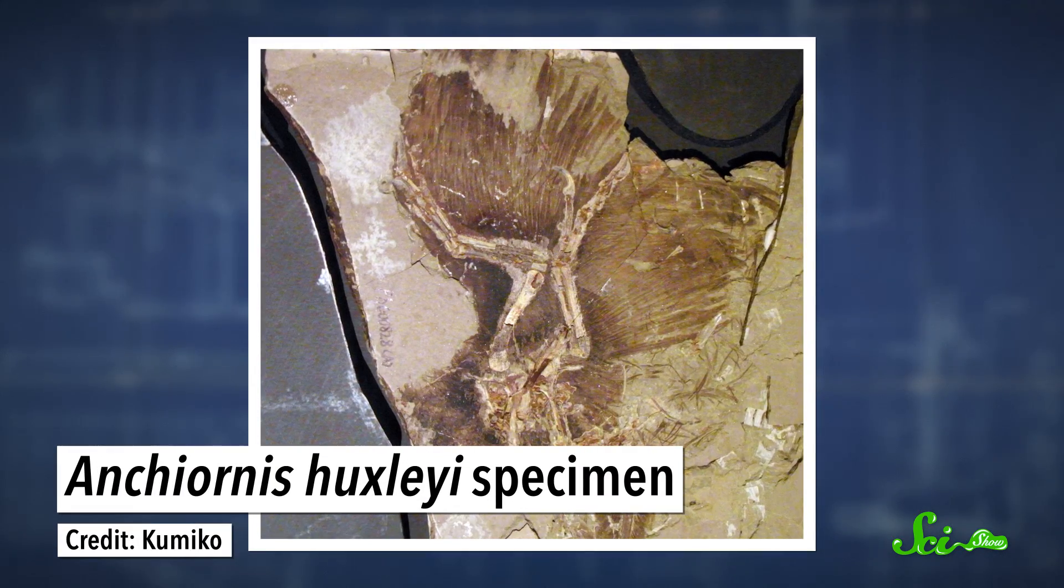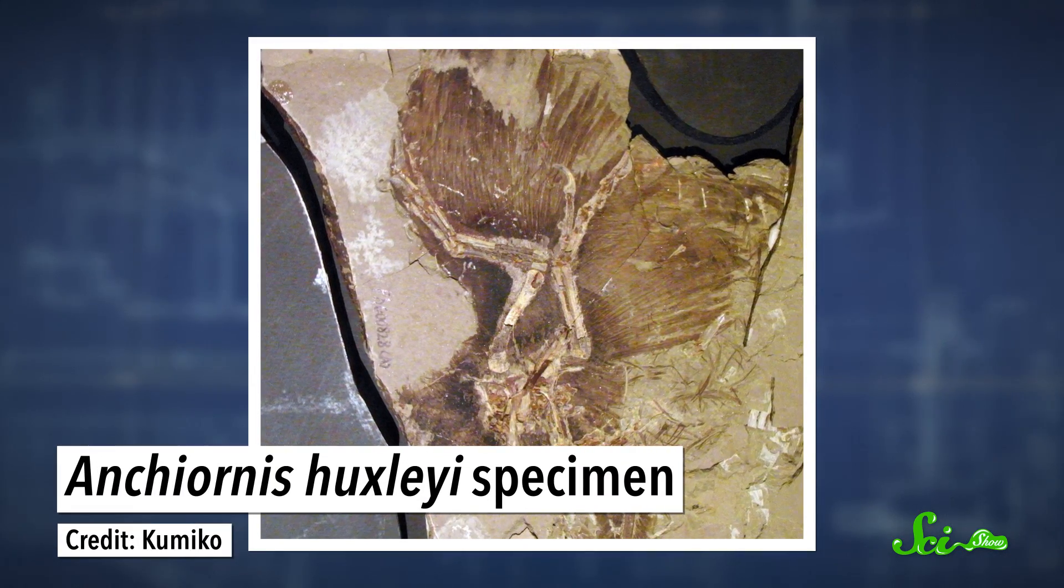This next study goes beyond bones and tells us more about dinosaur outsides. It's well-established that many dinosaurs had feathers, from a bunch of fossilized impressions. And a 2016 paper literally added a whole new dimension to the study of these feathers. It described, for the first time ever, a 99-million-year-old feathered dinosaur tail trapped in amber and stunningly preserved in 3D.